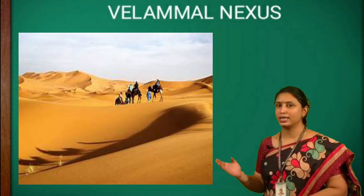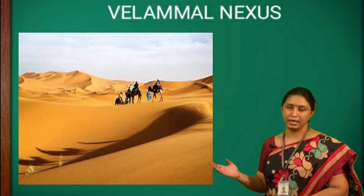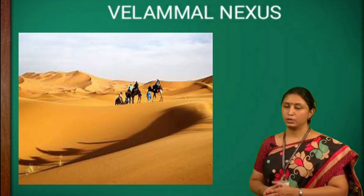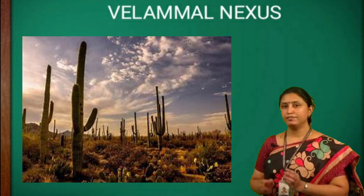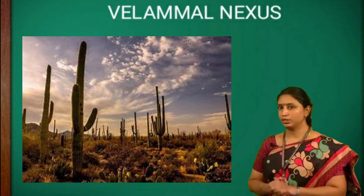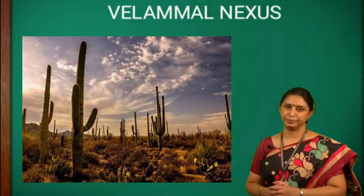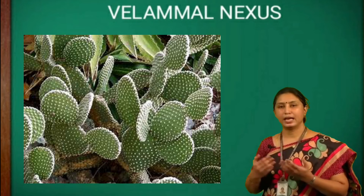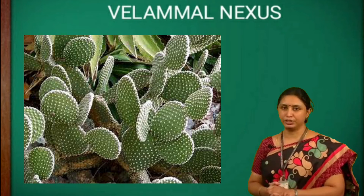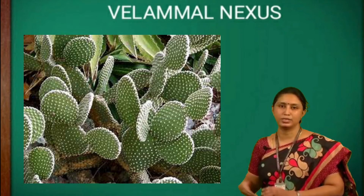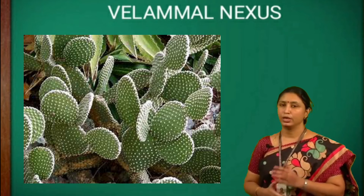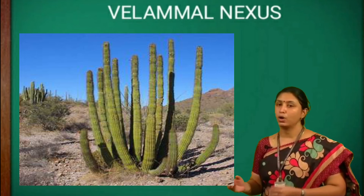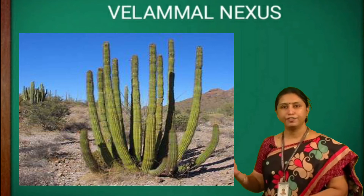Desert is a very hot and dry area where there is very little rainfall, so plants that need very little water to grow can survive here. Desert plants have special features to adapt themselves to their natural surroundings. Usually desert plants do not have leaves or have very few of them.